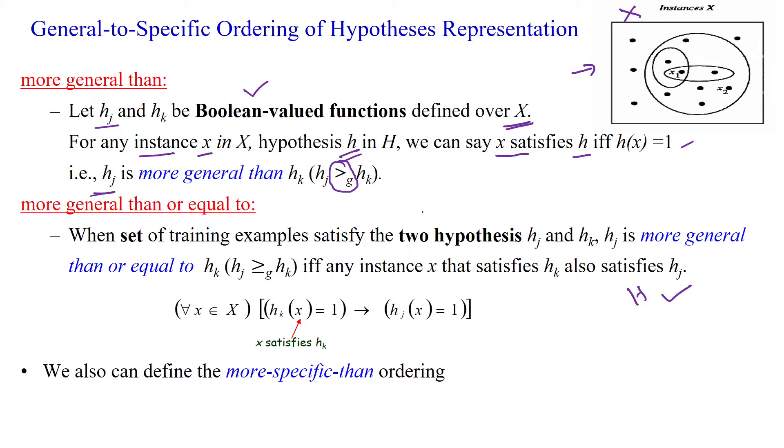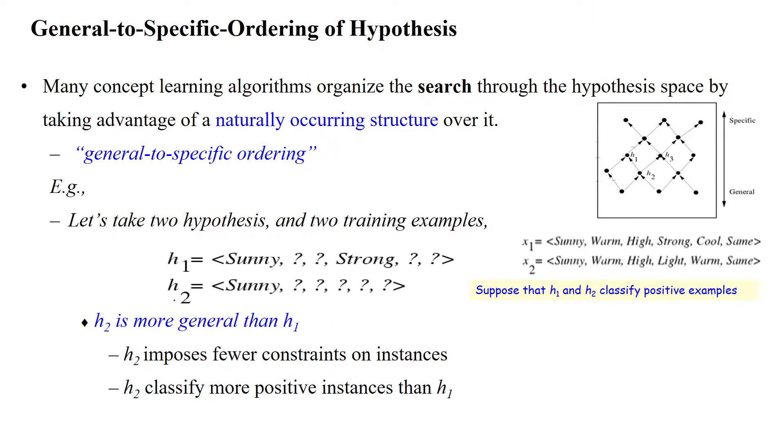In the previous video we have seen that h2 satisfies both training examples x1 and x2 because the sun is the only specific value given in h2, remaining all are question symbols. So it will accept any different values in the attributes.